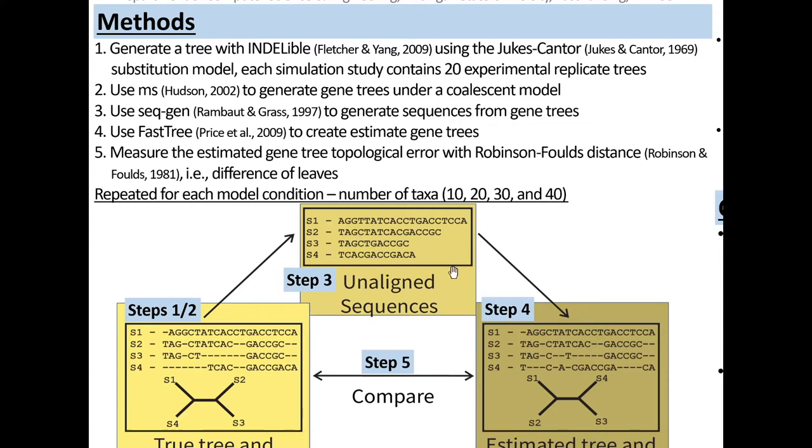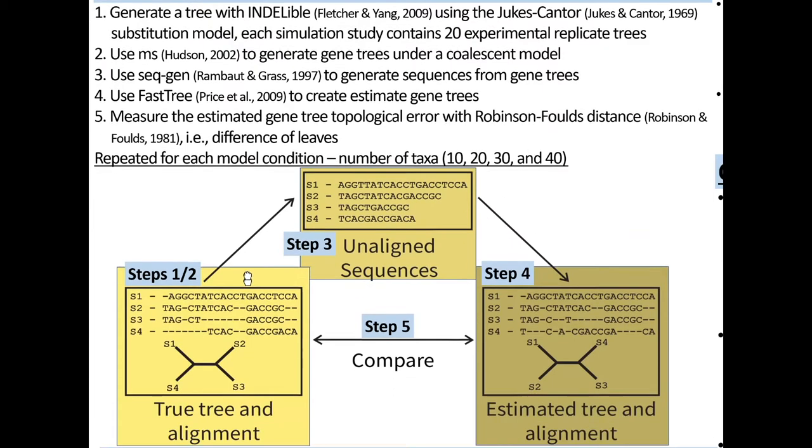Use the program FastTree to create estimated gene trees using the sequences seen visually in this step 4. And then I will measure the topological error between the estimated and true gene tree with the Robinson-Foulds distance seen here in step 5. This will be repeated for each model condition focusing on the number of taxa with 10, 20, 30, and 40 taxa.